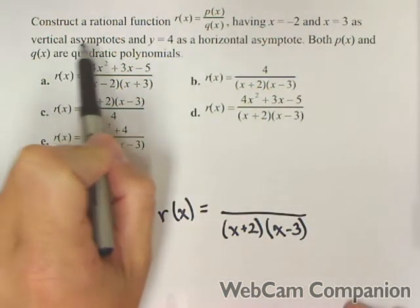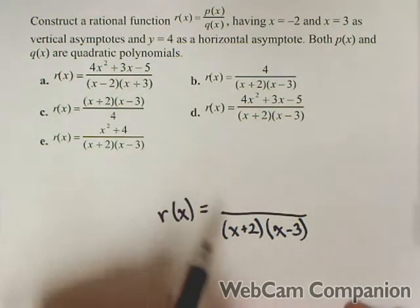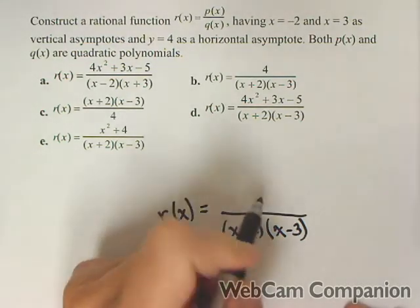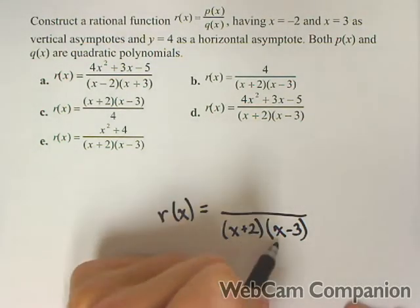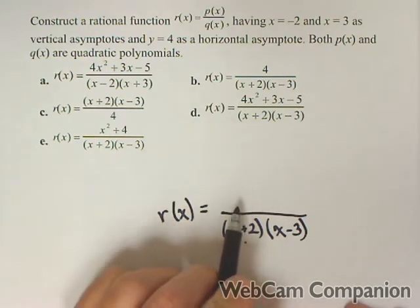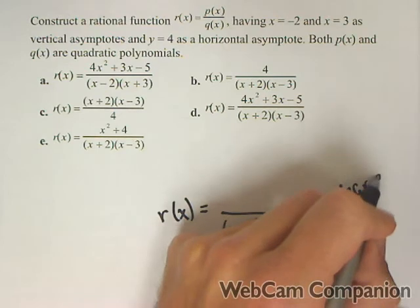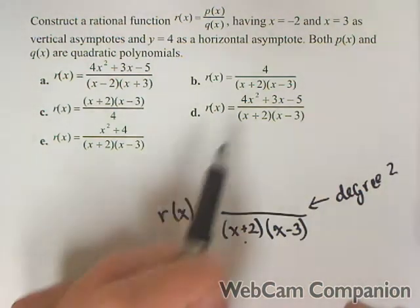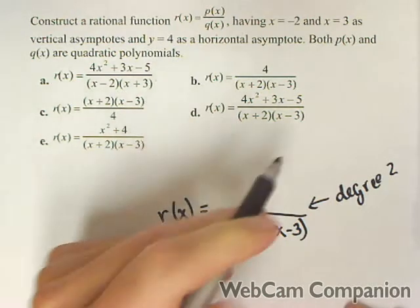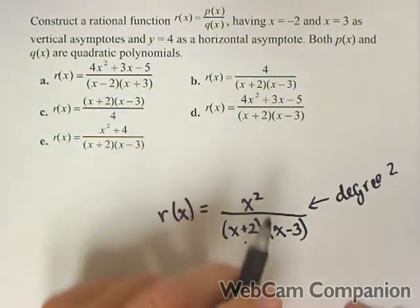Now we have y equals 4 must be a horizontal asymptote. That means the numerator—this is degree 2 on bottom—our numerator must also be degree 2, because they must have the same degree to have a horizontal asymptote at some number. So that means our numerator has to have an x squared term in it.